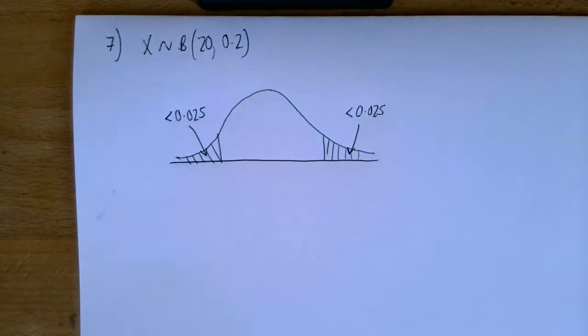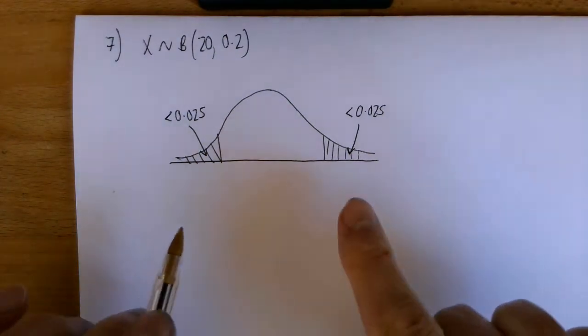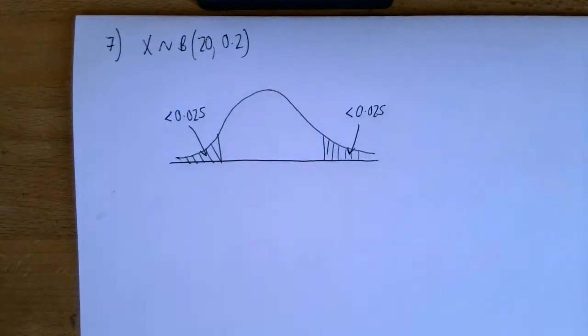This is one of those questions that says the probability in the tail should be as close to 0.025 as possible, rather than less than. So less than is the default setting, but there's a definite difference in the wording here. Anyway, we're told that this is about...